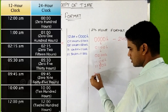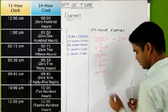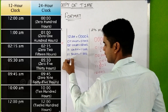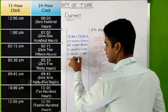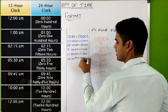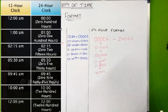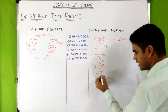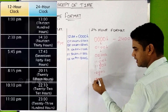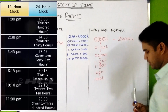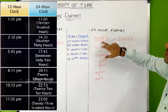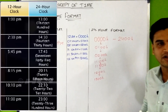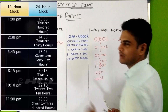Similarly, if it's 12 PM (noon), it will be written as 1200 hours. So 12 PM or 12 noon is written as 1200 hours in 24-hour format. Then if it's 1 PM, it is written as 1300 hours, because the time starts from 0000 and ends at 2400 — we continue counting the hours rather than repeating them.